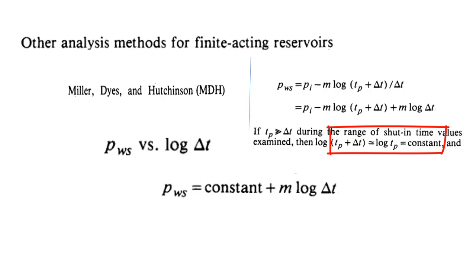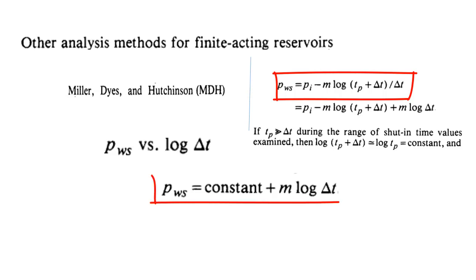The ideal pressure buildup equation will reduce to Pws equals constant plus m times log Δt. The slope m is the same either in the ideal pressure drawdown or buildup, or in this pseudo steady case. So we can apply this Horner's plotting technique, and the slope will be the same even for bounded reservoir. From the slope, we can estimate the reservoir properties.